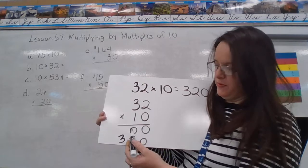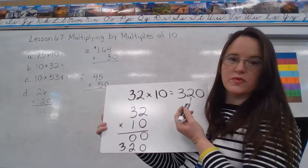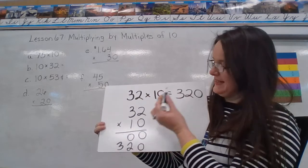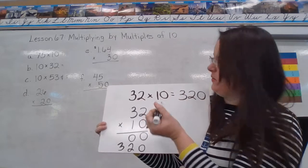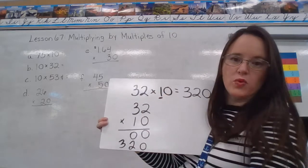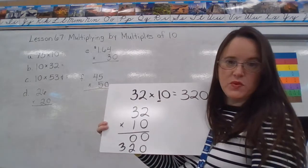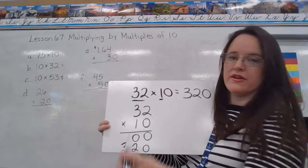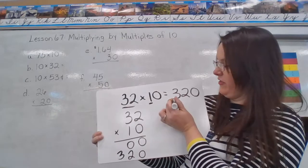And then when we add them up, we're adding nothing, 0 to 320, so we get our answer of 320. So the reason this trick of just tacking that 0 on at the end, the reason that works is because of this 1 right here. When we multiply anything times 1 equals itself, so including 32 here.